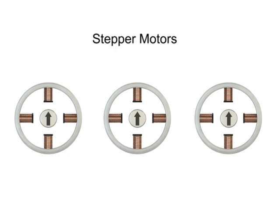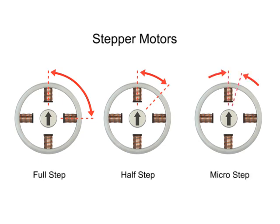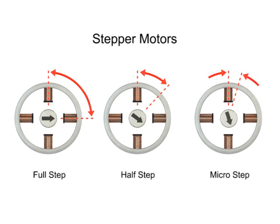Stepper motors have three step modes of operation: full, half, and micro-stepping. The type of step mode output of any stepper motor is dependent on the design of the driver. The driver also controls both the step angle and speed of the motor by switching the field coils in a set sequence.